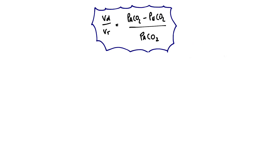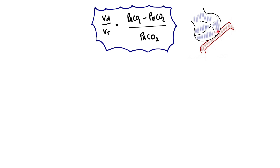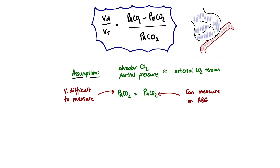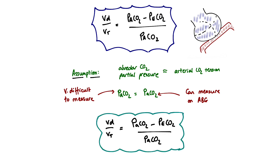At this stage it's important to point out that measuring the CO2 partial pressure within the alveolar space is incredibly hard to do. We can take the equation one step further by making an assumption: the partial pressure of CO2 within the alveolar space is equivalent to the CO2 tension within the pulmonary capillaries, because CO2 freely diffuses across this membrane. Mathematically, P(A)CO2 — the partial pressure within the alveoli — is equivalent to P(a)CO2, the partial pressure of CO2 in an arterial sample. This takes us from something very difficult to measure to something measurable on an arterial blood gas. Making that substitution gives us the final form of the Bohr equation.